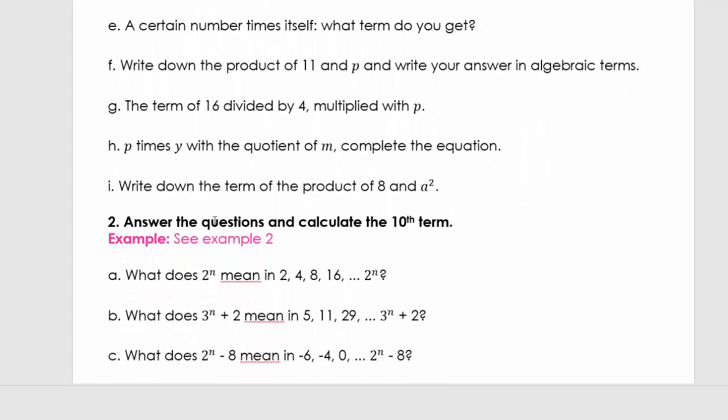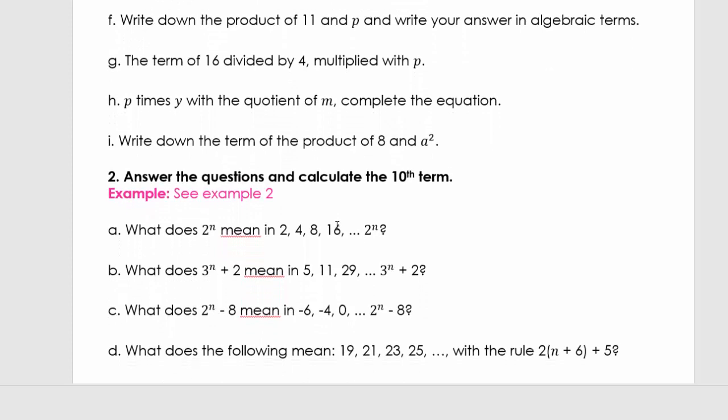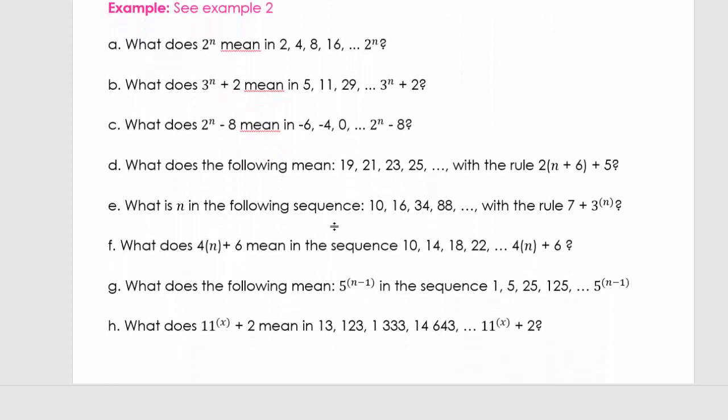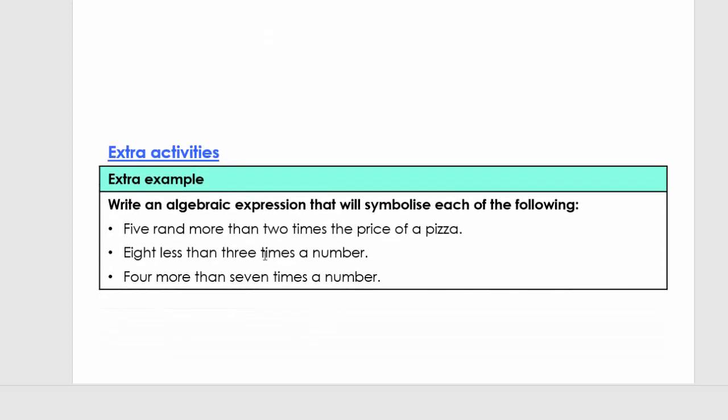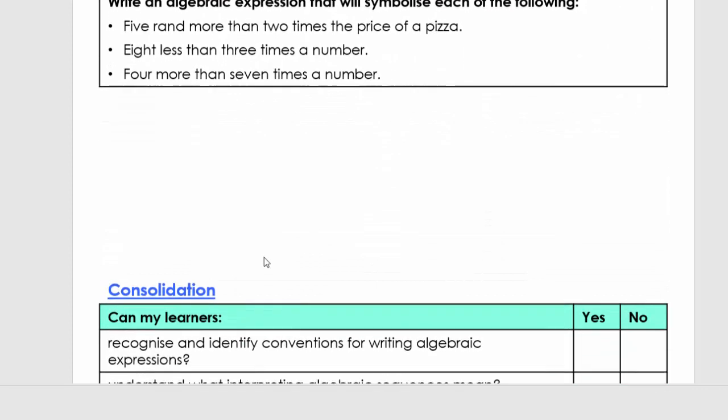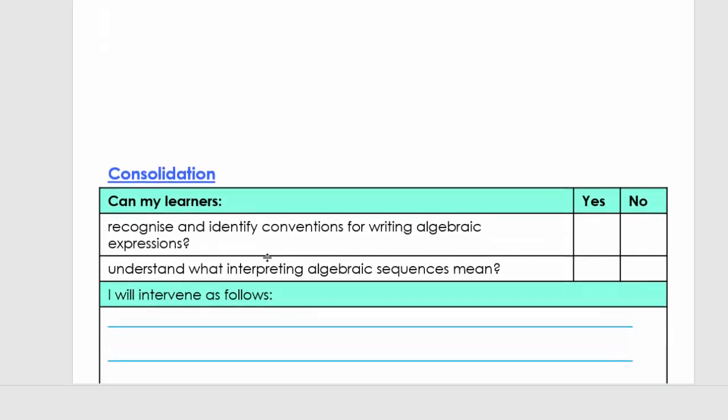Then what you're going to do is you can work through example 2 again and you're going to answer these questions. Then you can go to the problem solving and see if you can solve it. Remember to use your distributive property. This is some revision. Then your extra activity you can complete. And then we come to the consolidation where if you answered yes on everything, you're going to carry on with the next activity. If you have no's, you need to revise, revisit that question, or you need to contact us at SATeacher.